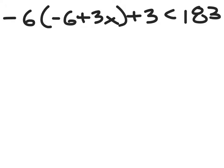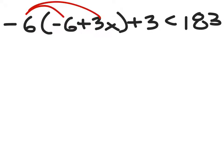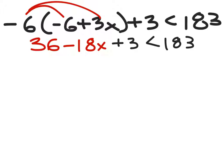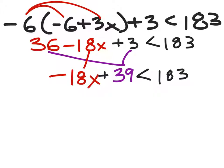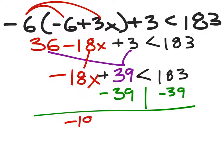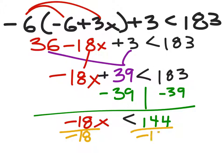On this one, first distribute the negative 6: that makes it positive 36 minus 18x, and the rest stays the same. Combining like terms, 36 and 3 gives 39 with the same inequality. Now subtract 39 from both sides to get negative 18x, which is less than 183 minus 39, giving us 144.